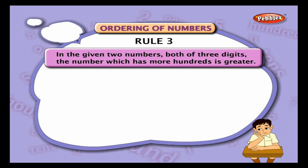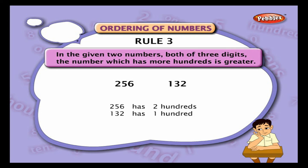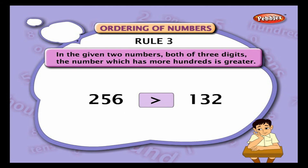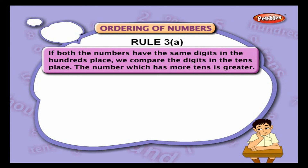Rule 3: in two numbers both of three digits, the number which has more hundreds is greater. For example, 256 and 132: 256 has two hundreds and 132 has one hundred, so 256 is greater than 132. Rule 3a: if both numbers have the same digit in the hundreds place, we compare the digits in the tens place.